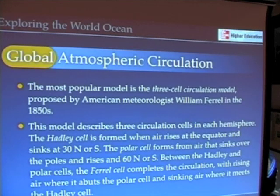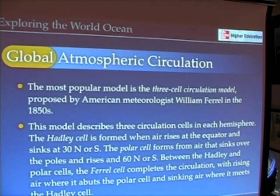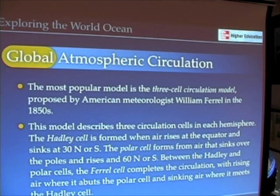These motions of the atmosphere, combined with the Coriolis effect, lead us to a discussion of the global circulation model for the atmosphere. The most popular one, taught for decades if not centuries, is the three-cell circulation model originally put together by the American meteorologist William Farrell.